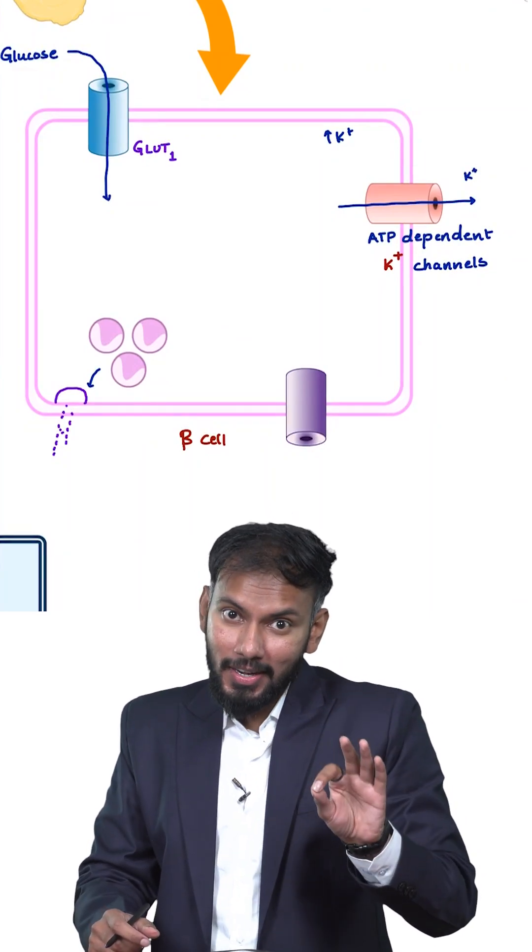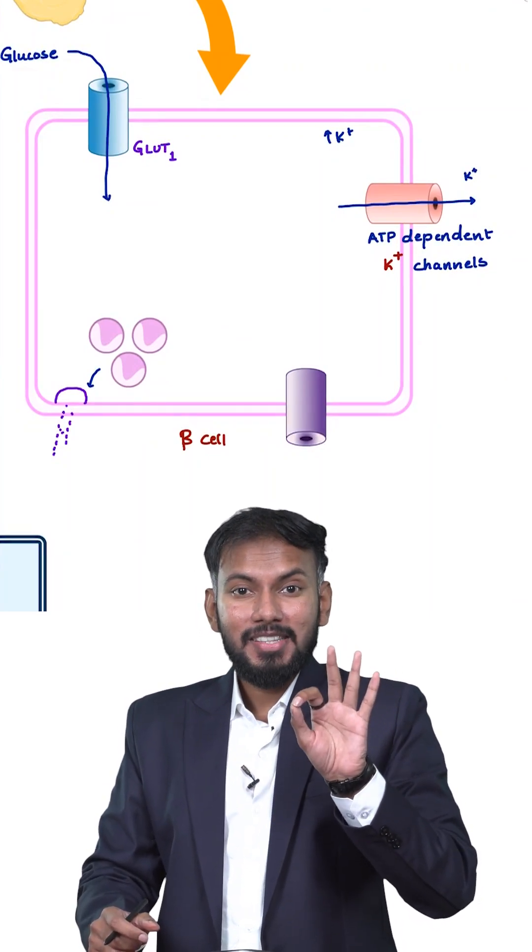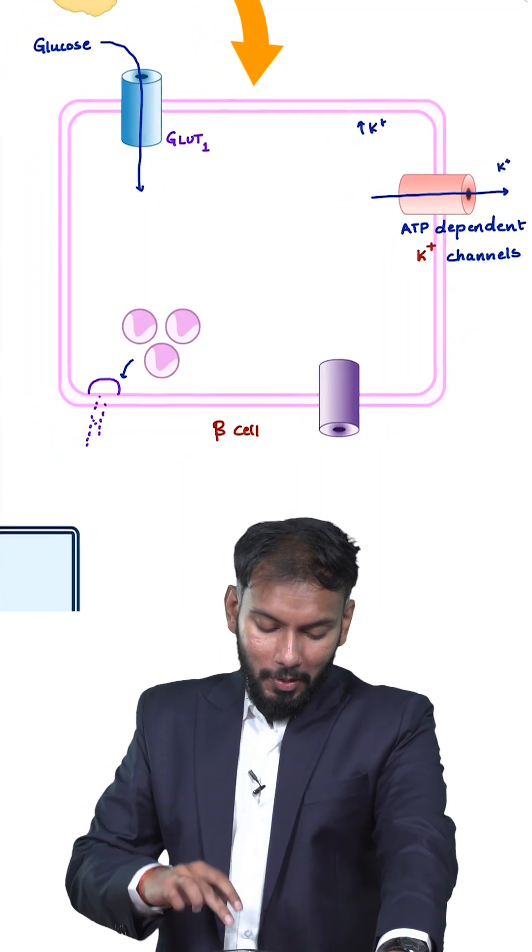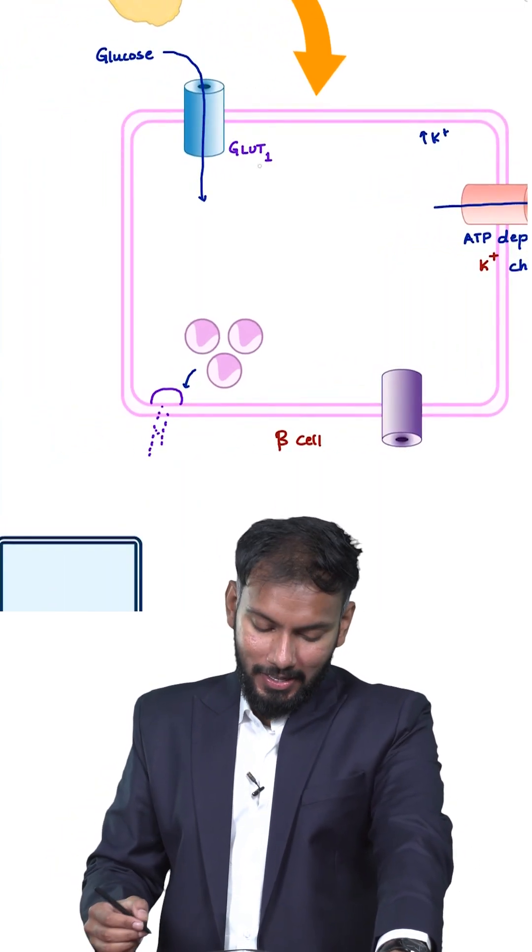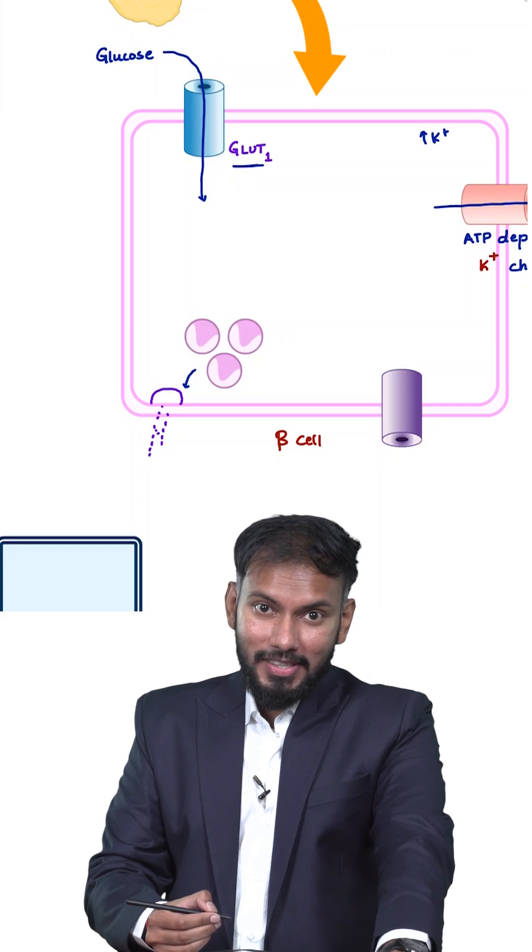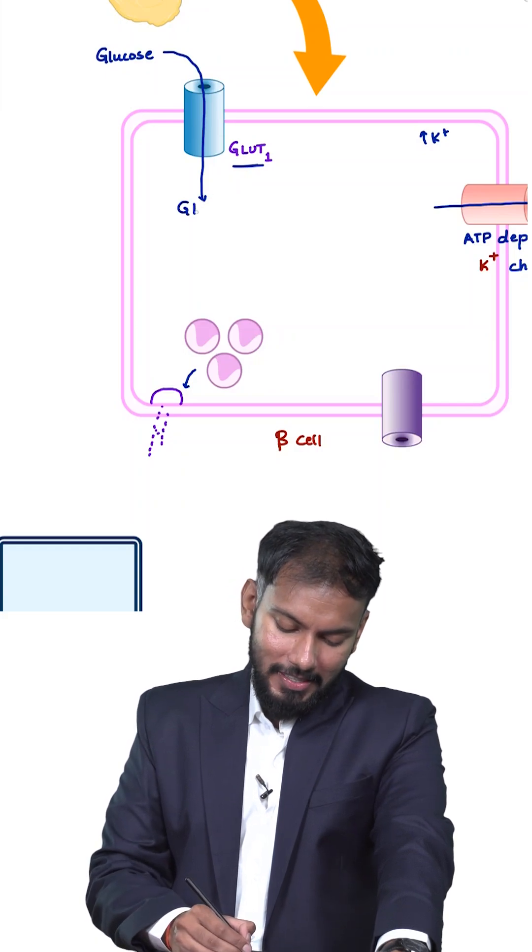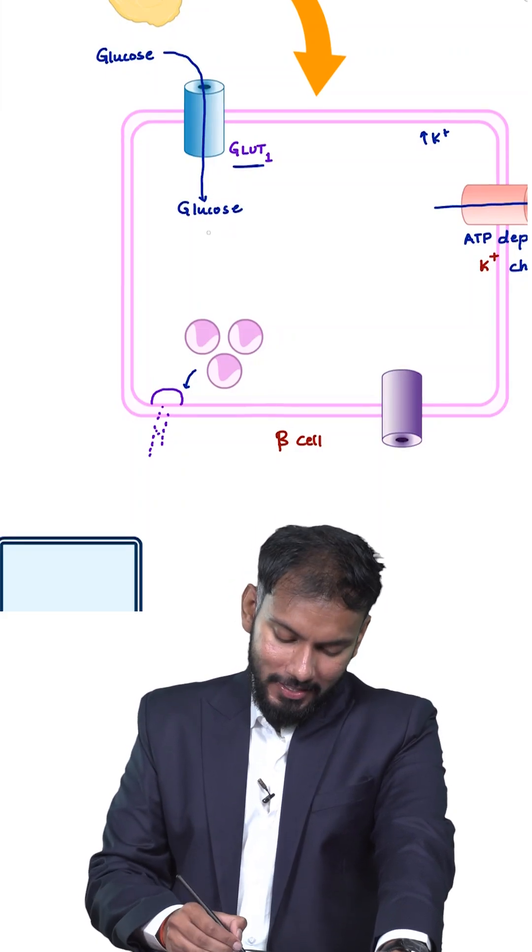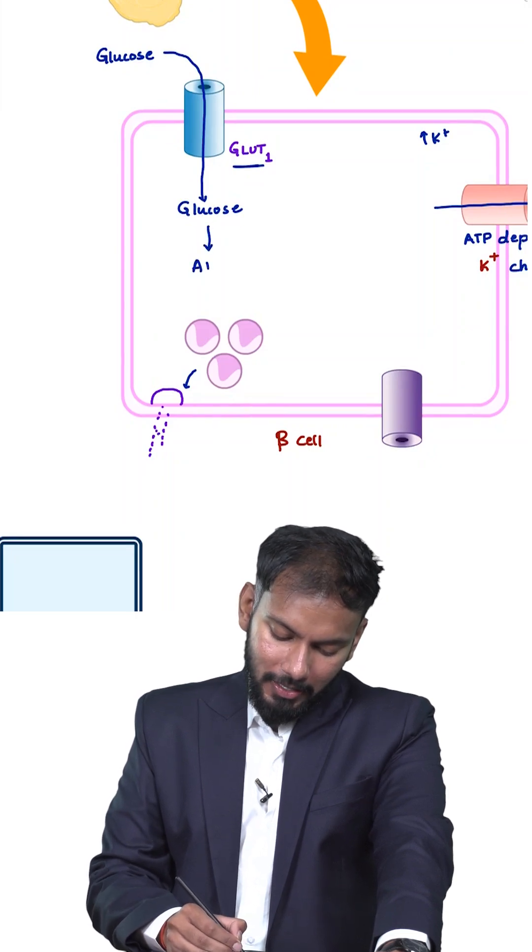But when glucose levels in the blood increase, this glucose will be taken up by the beta cell with the help of GLUT1 receptors. When the glucose is inside the cell, it will undergo glycolysis and it will release ATP.